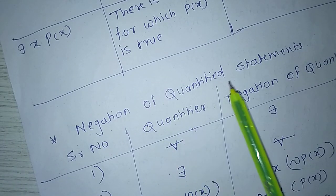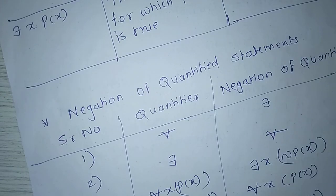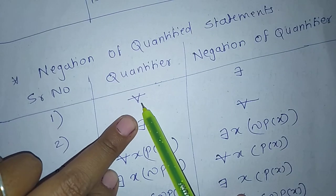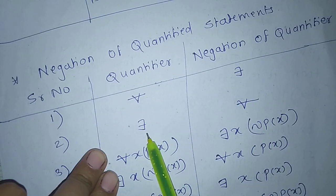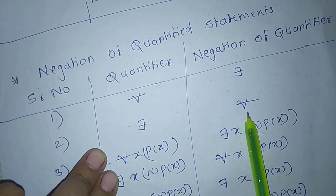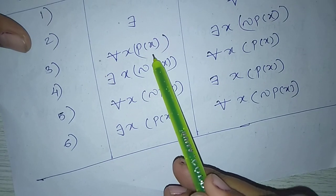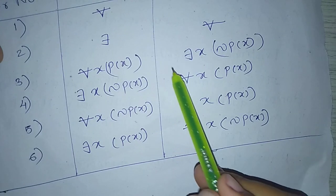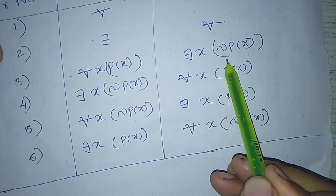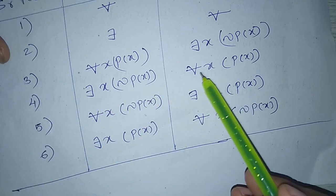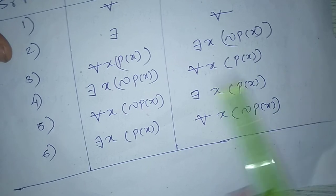Next, negation of quantified statements. The negation of ∀ is ∃, and the negation of ∃ is ∀. More specifically: the negation of ∀x P(x) is ∃x ¬P(x), and the negation of ∃x ¬P(x) is ∀x P(x). Also, the negation of ∀x ∃¬P(x) is ∃x P(x).